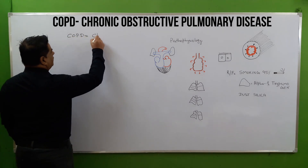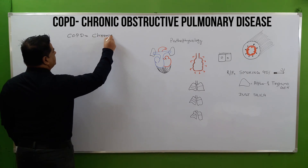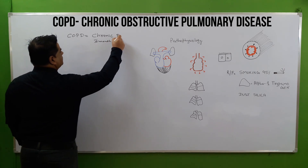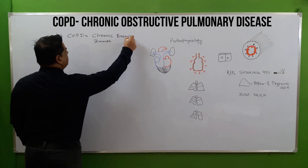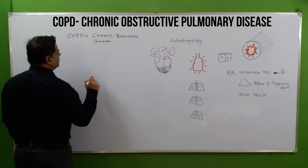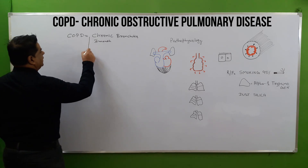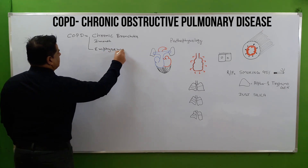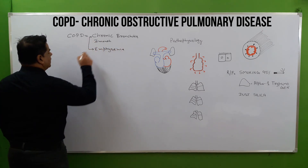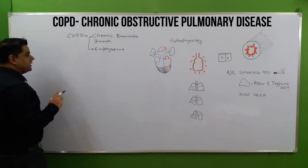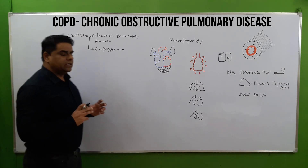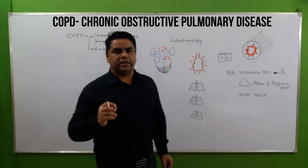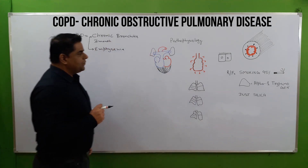First is chronic bronchitis, which means persistent for a minimum of three months. The second disorder that COPD covers is emphysema. We will discuss both of these disorders, which generally coexist together to make COPD — chronic obstructive pulmonary disease.